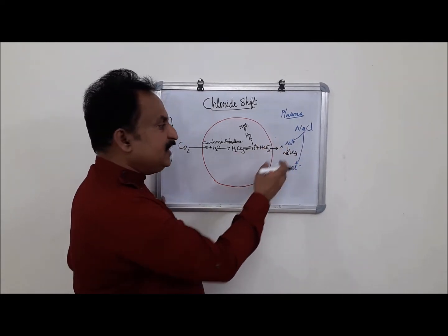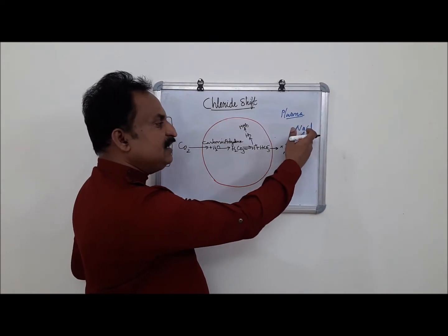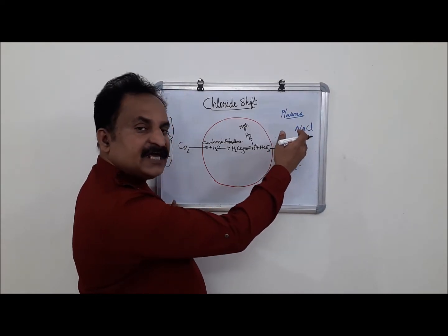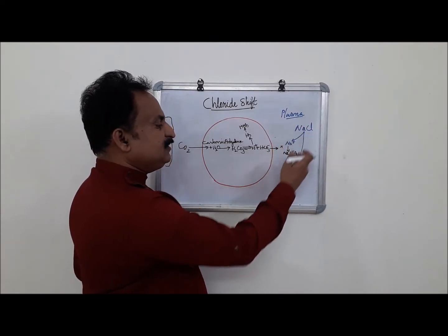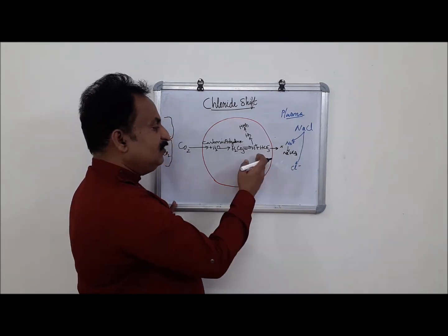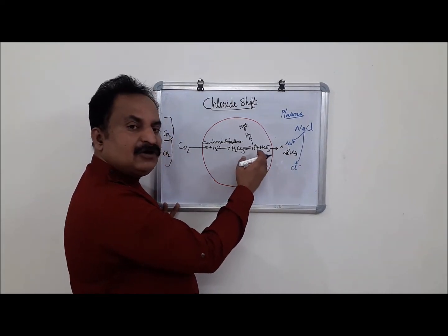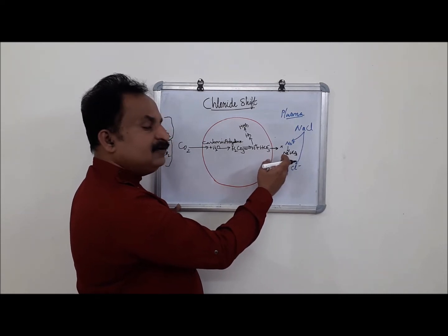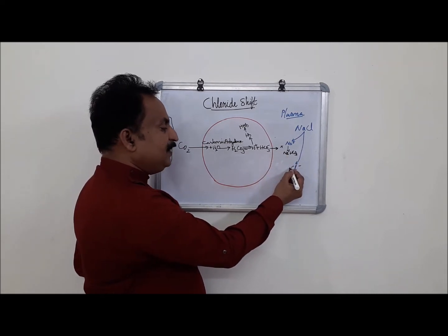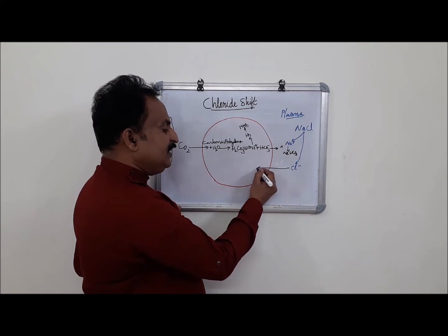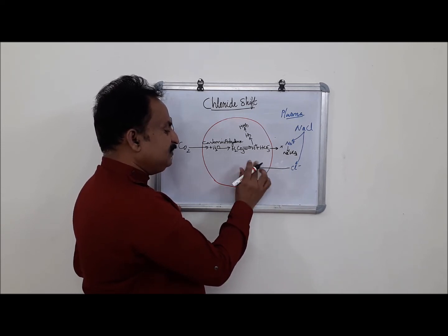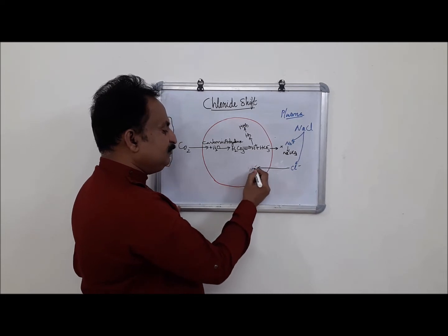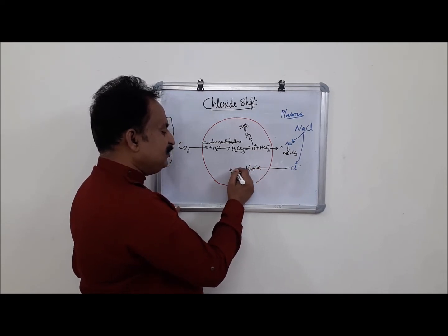Blood plasma contains sodium chloride, NaCl, which exists as Na+ ions and Cl- ions. When HCO3- or bicarbonate ions diffuse into plasma from the RBC, the chloride ions will enter into the RBC and combine with potassium ions present in the RBC to form potassium chloride.